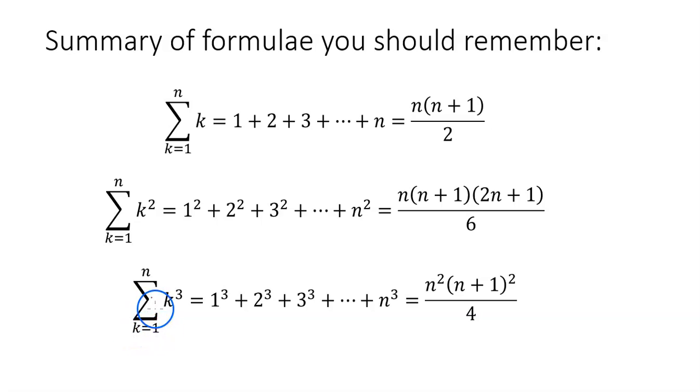And this last one, k equals 1 to n of k cubed, the sum of that turns out that's equal to n squared times n plus 1 squared divided by 4. And we didn't derive that, but I gave you a method for how to derive it, so you can do that as an optional exercise.